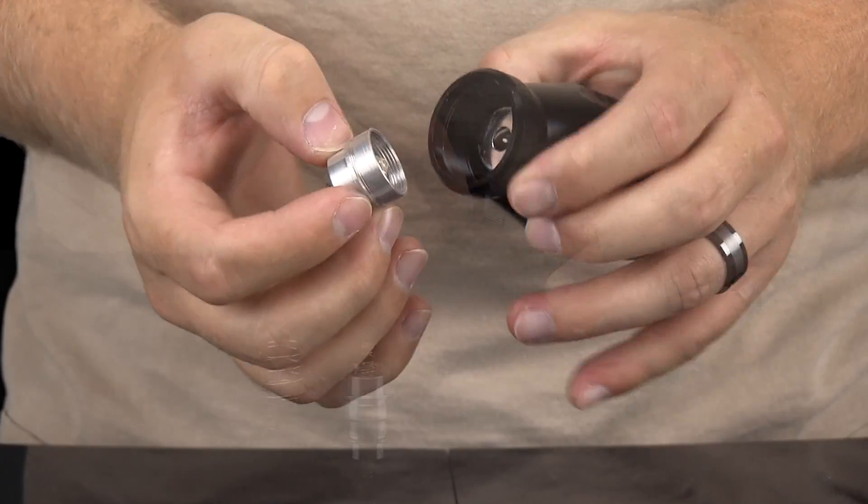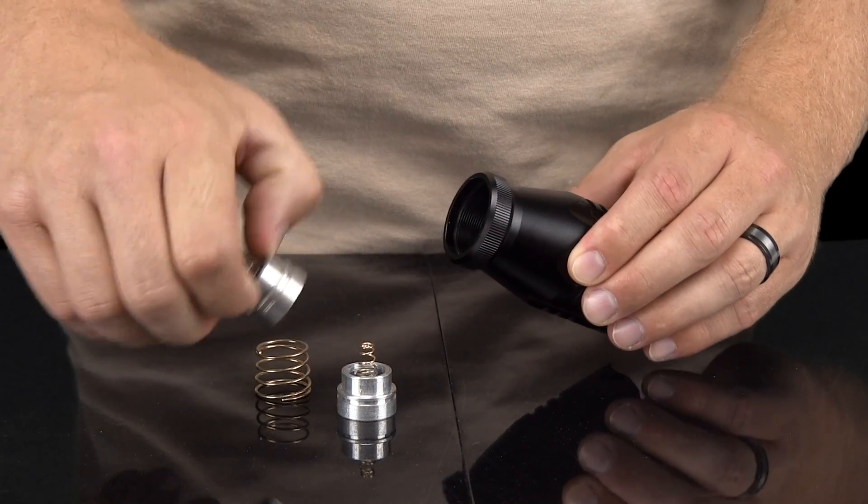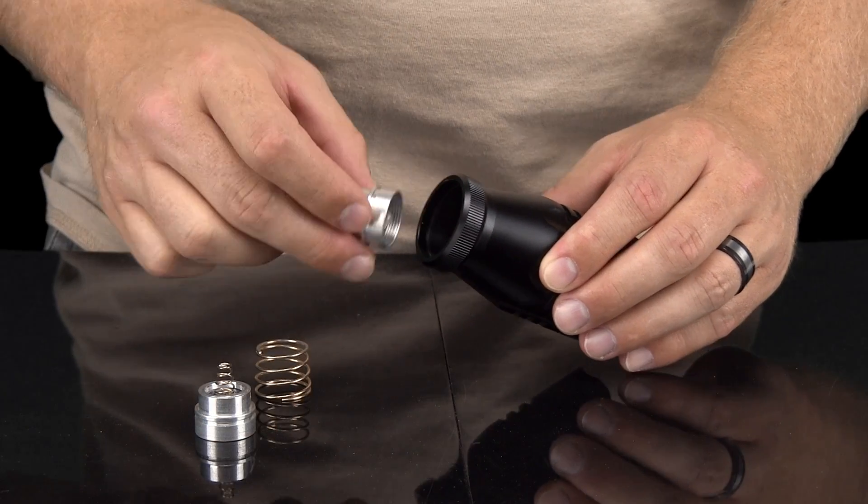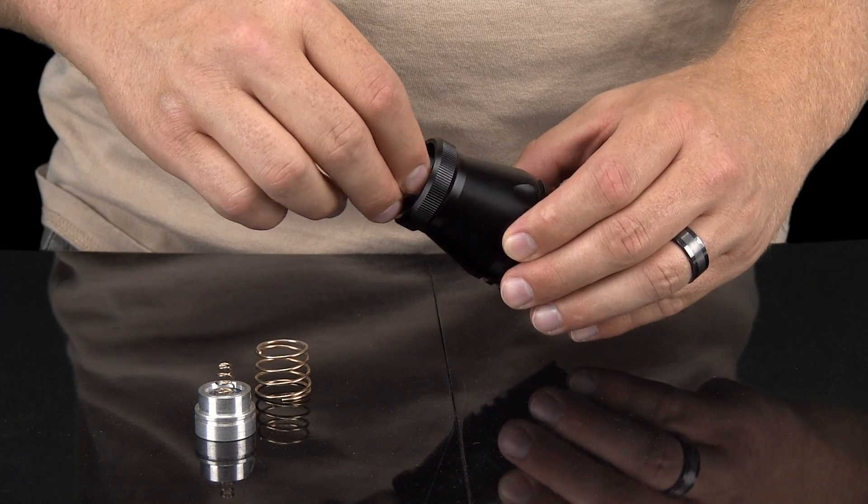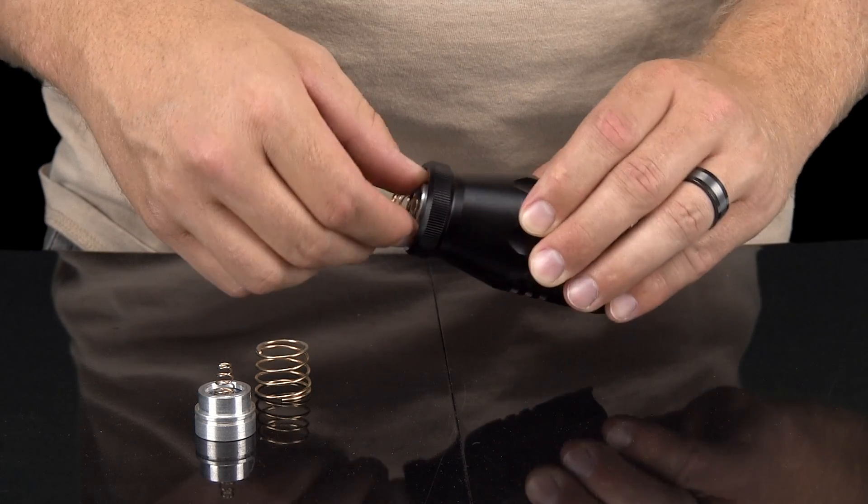Once your LED is out, you install the new one by reversing the steps we just went over. Again, be sure not to force the LED into the reflective housing and do not screw the LED in by twisting on the attached spring.